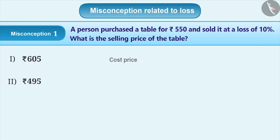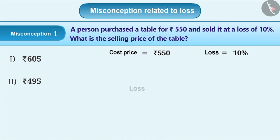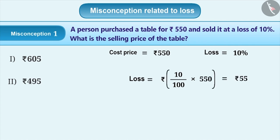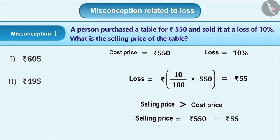Here, cost price is Rs. 550 and loss is 10%. That means, loss is equal to 10/100 into Rs. 550, which is equal to Rs. 55. Students often think that selling price is always greater than cost price. In order to get selling price, they add loss to cost price. This is a misconception which leads to the incorrect answer of Rs. 605.